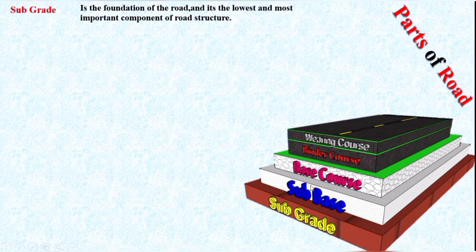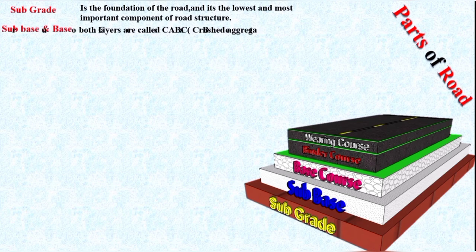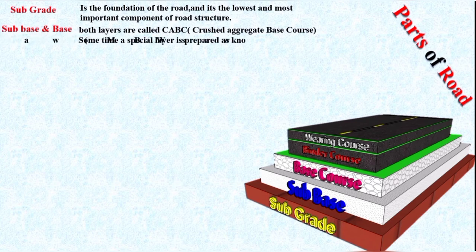In the case of flexible pavement, the upper and lower base courses are separated, having different materials. Sometimes the sub-base and base course are also called CABC — Crushed Aggregate Base Course. In some cases, we only provide a special layer known as WBM — Water Bound Macadam. This WBM layer is only provided if the subgrade is of very high strength and a high-quality road is not required.